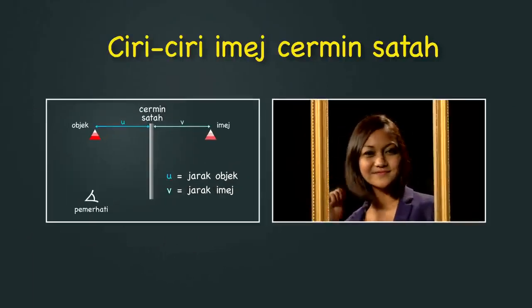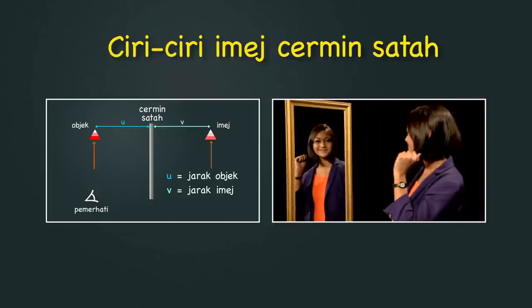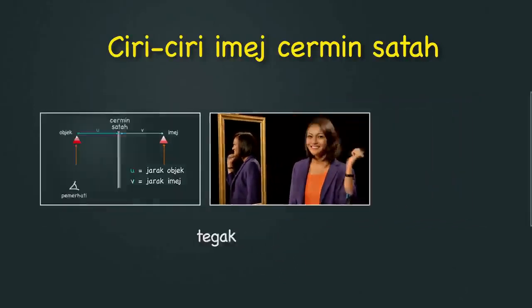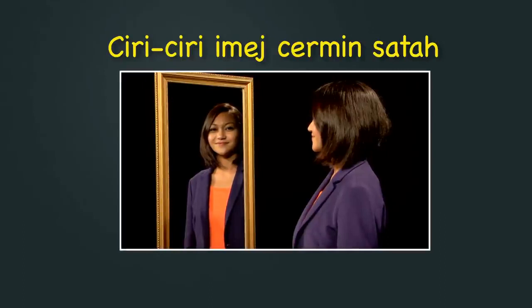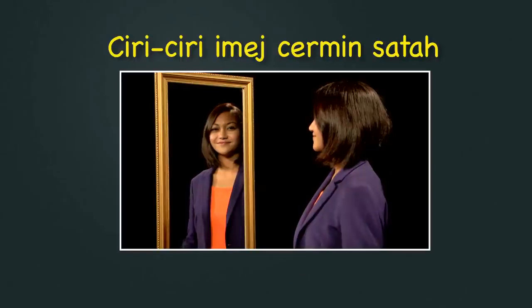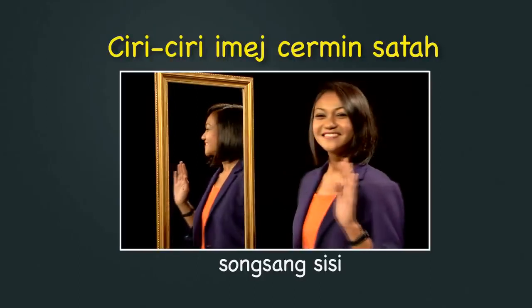Sudah tentu ianya tegak kan? Jadi ciri yang ketiga ialah tegak. Empat: Ciri yang keempat ia dipanggil maya. Imej yang maya adalah imej yang tidak dapat terbentuk di atas skrin. Lima: Akhir sekali, imej ini mempunyai ciri yang dipanggil song sang sisi. Cuba berdiri depan cermin dan angkat tangan kiri. Cuba lihat imej kamu, ia sedang mengangkat tangan kanan. Ini yang dimaksudkan dengan song sang sisi.